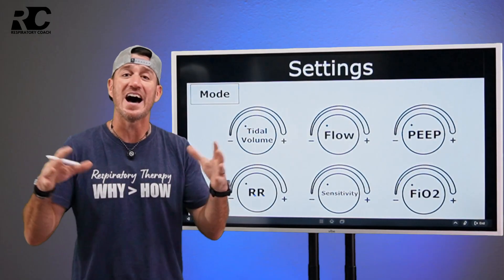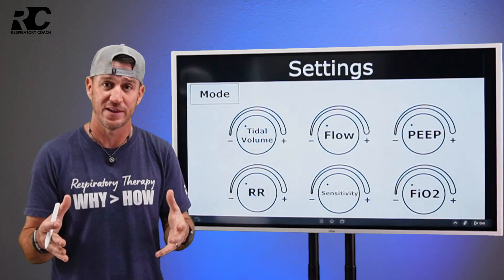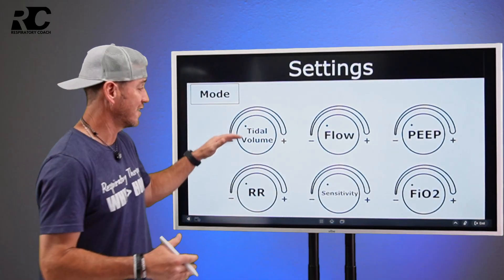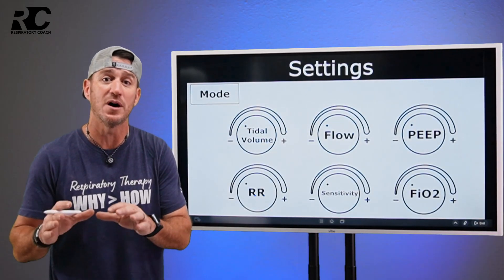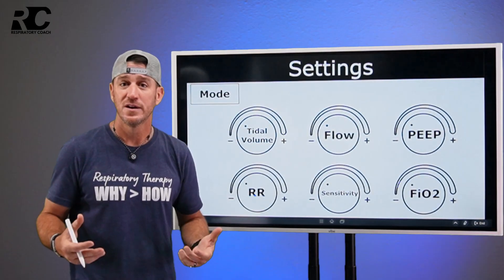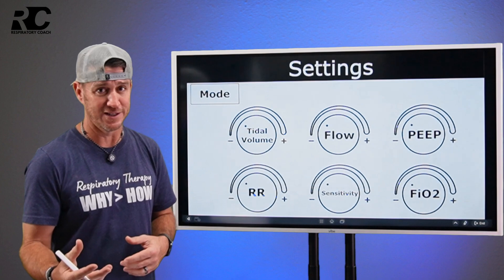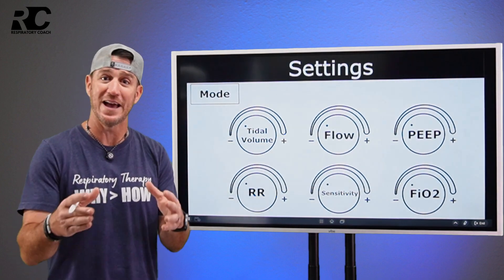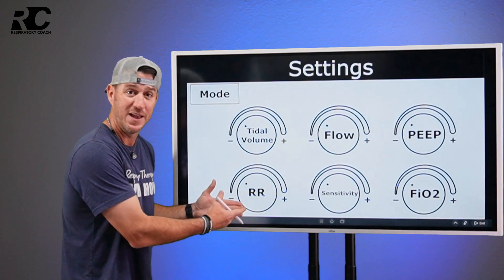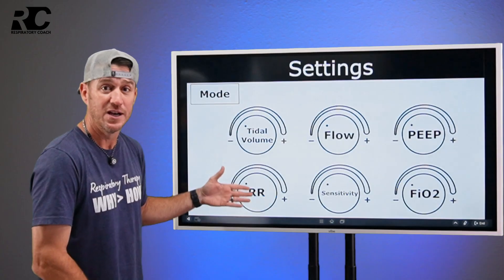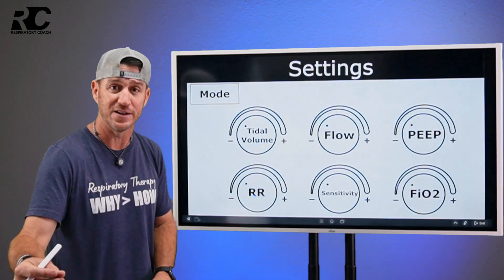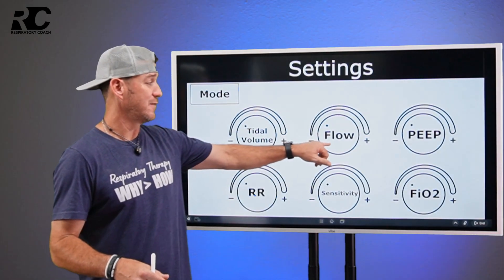So tidal volume is the size of each breath. So if you set it on 450 milliliters, then the ventilator says, okay, I'm going to deliver a tidal volume of 450 milliliters. And you say, okay, but how often is it going to deliver that 450 milliliters? Well, I'm glad you asked because that's going to bring us back to respiratory rate, 10 breaths per minute. The ventilator will say, okay, 10 times a minute, I'm going to deliver a tidal volume of 450 milliliters. So then you say, okay, so then what's flow?